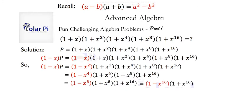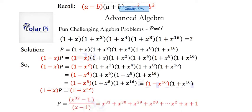And finally we see that 1 minus x times P is equal to 1 minus x to the 32nd and so all we have left to do is divide both sides of this last equation by 1 minus x and once we do we're going to get that P is equal to 1 minus x to the 32nd divided by 1 minus x and here it is.